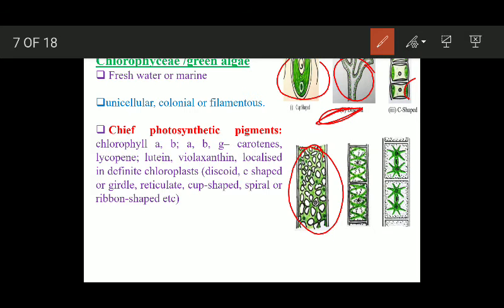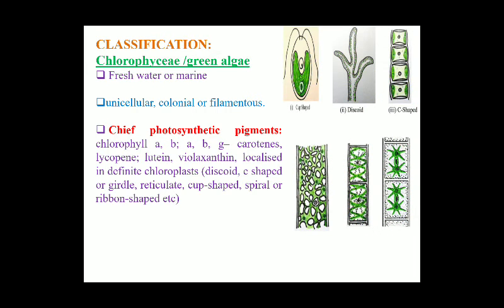In some algae we have a reticulate type of chloroplast with a reticulate anastomosed pattern. We also have cup-shaped, spiral or ribbon-shaped, and in some cases star-shaped chloroplasts. So the chief photosynthetic pigments are present in chloroplasts, and these chloroplasts vary in shape: cup-shaped, disc-shaped, C-shaped or girdle-shaped, reticulate, spiral or ribbon-shaped, and star-shaped.